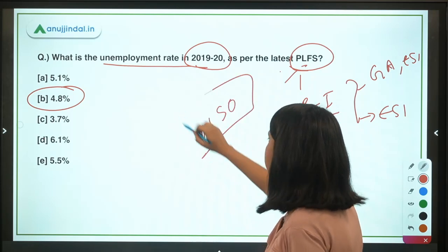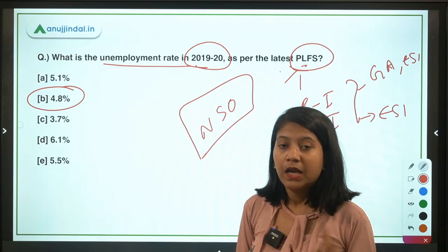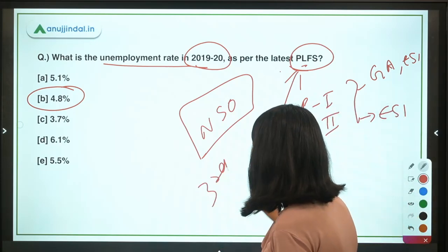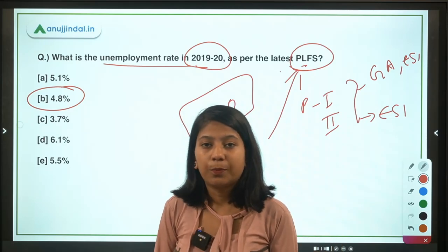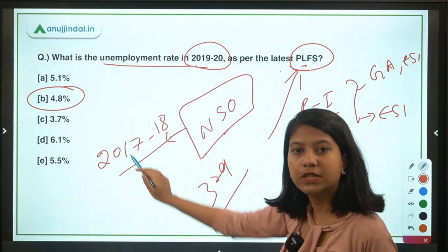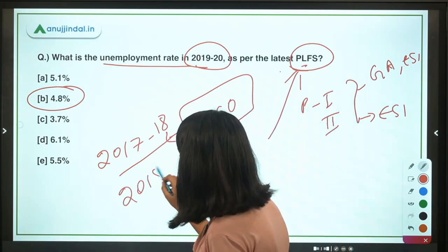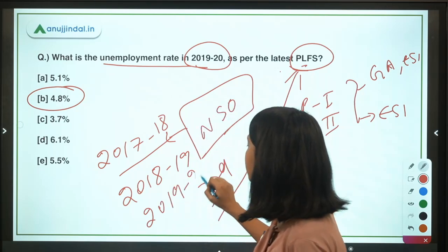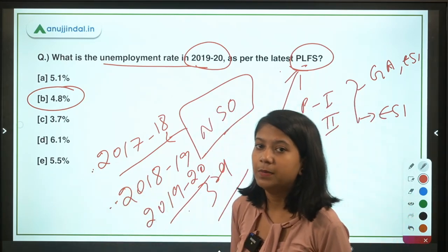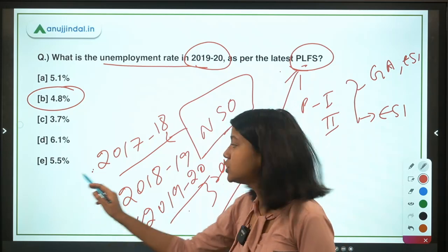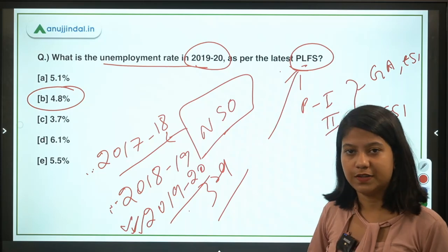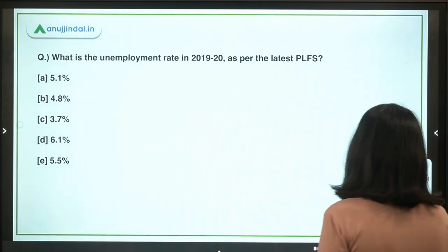This is the third edition of the PLFS report. It is an annual report published by NSO, beginning with 2017–18 as the first edition, then 2018–19 as the second, and now 2019–20 is the third one right in front of us. The previous PLFS surveys are not at all useful for your examination now that the new one has come up, so you can focus on this third — the latest — PLFS only.